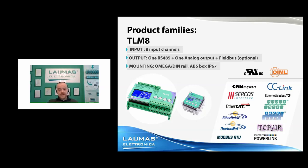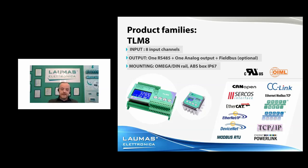The TLM8 is available in two versions: for DIN rail mounting — the most common — and in an IP67 ABS housing that allows installation on-site, close to the load cell and away from the PLC and control cabinet. This housing version is available both with and without an external keypad. Without the keypad, nobody will accidentally change the settings; with the keypad, you can use it like a standard weight indicator with all the advanced features described.